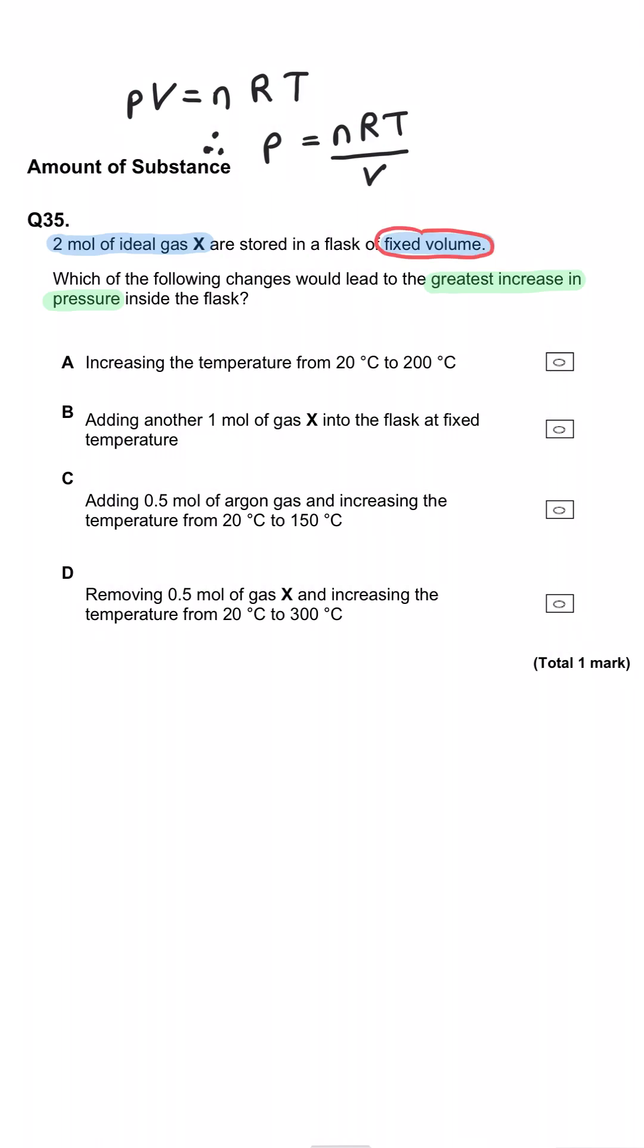We have to use PV equals NRT in the arrangement of P equals NRT divided by V. Since we've got a fixed volume, it's constant. We can remove it. R is the gas constant. We can remove it. So we're left with P being proportional to moles times by temperature.